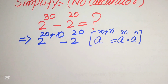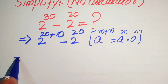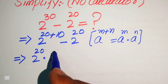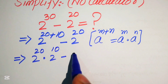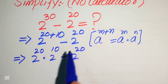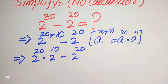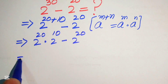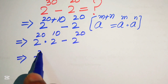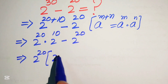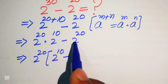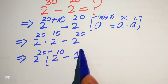According to this exponent law, we write the expression as 2 to the power of 20 multiplied by 2 to the power of 10, minus 2 to the power of 20. Now we see that 2 to the power of 20 is the common term, so we take out 2 to the power of 20, and the remaining terms are 2 to the power of 10 minus 1.